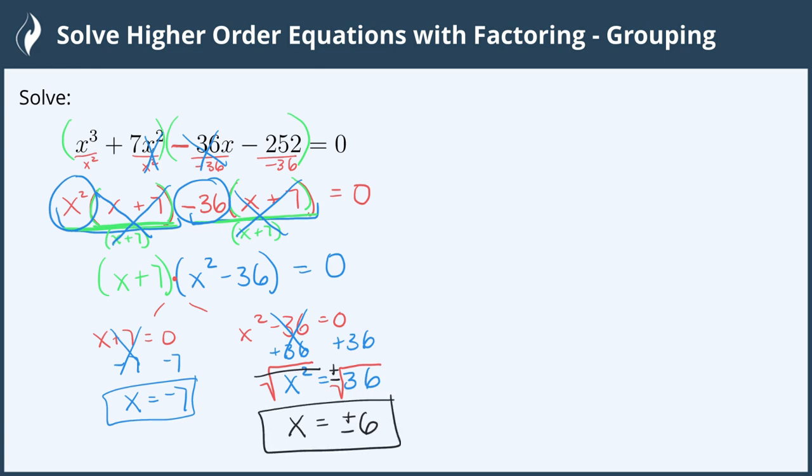To list these from low to high, we write x = -7, -6, and 6. Now we have all our answers for this higher order equation, and we're all done!